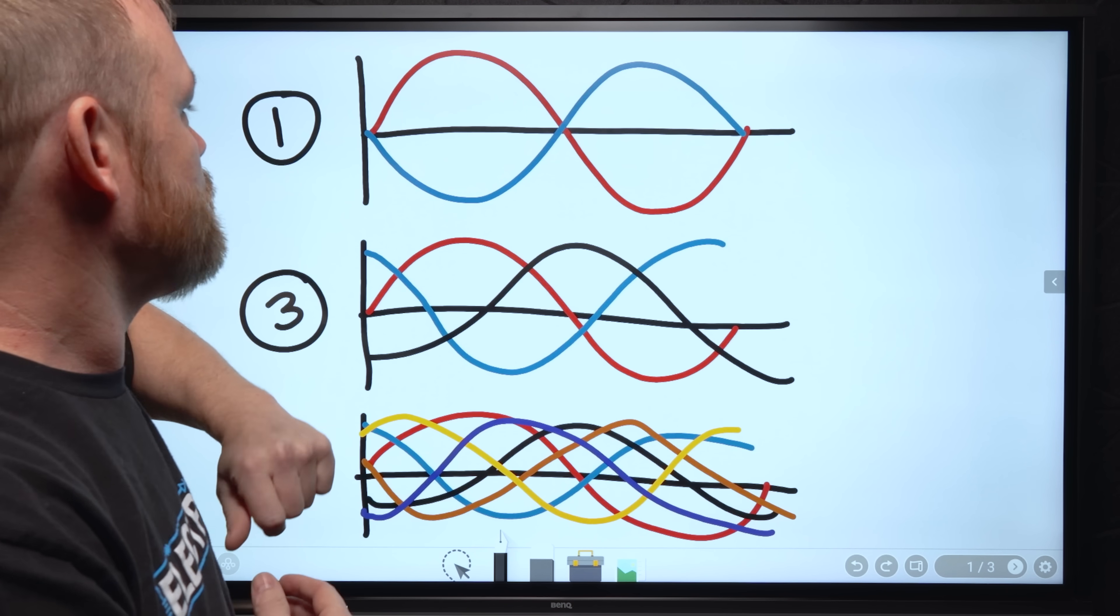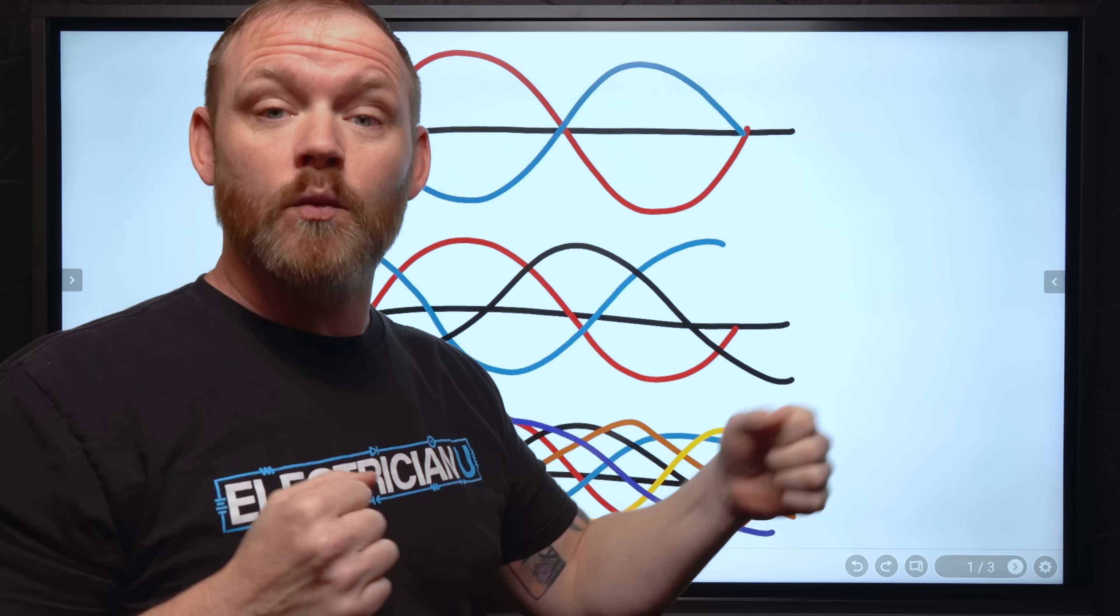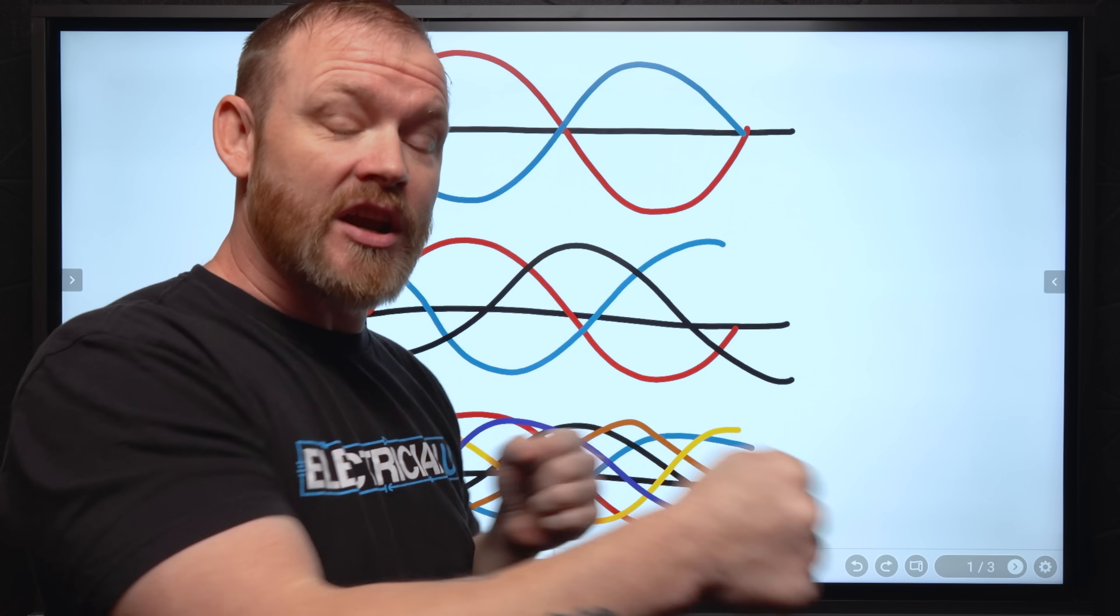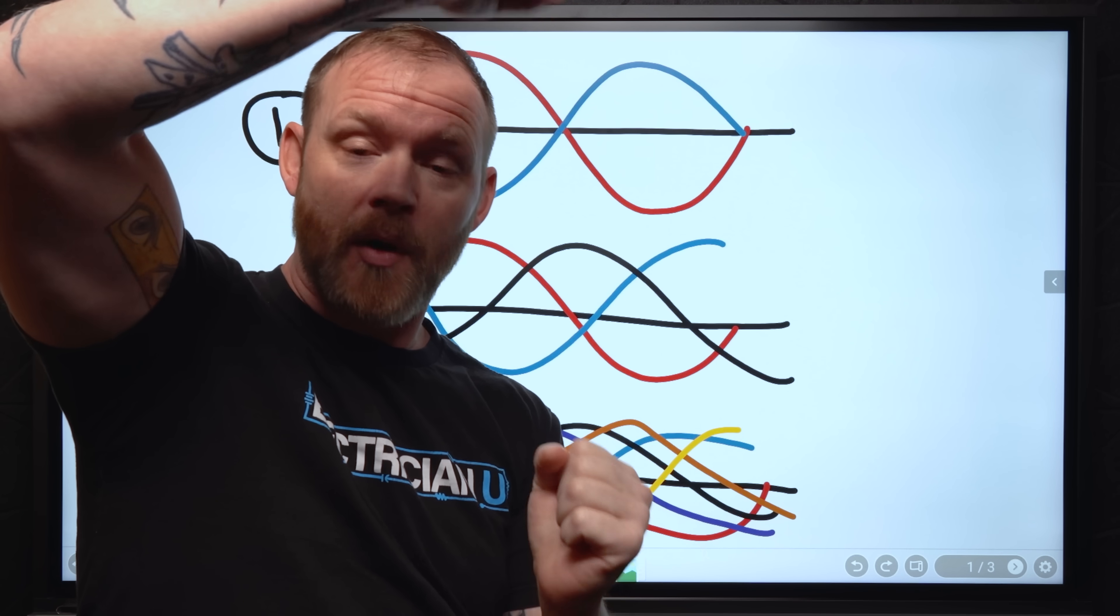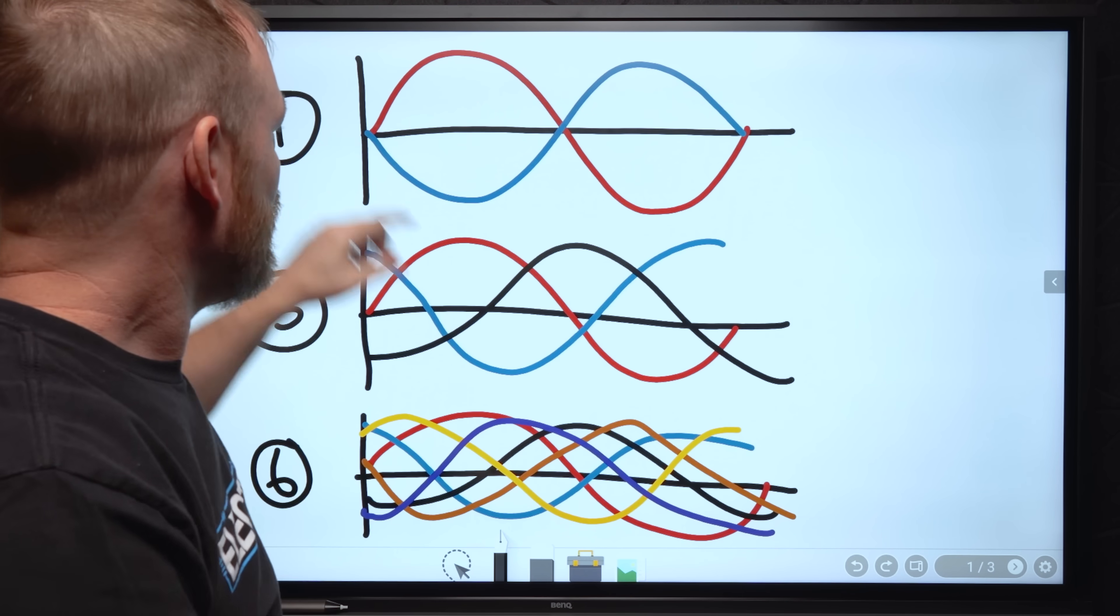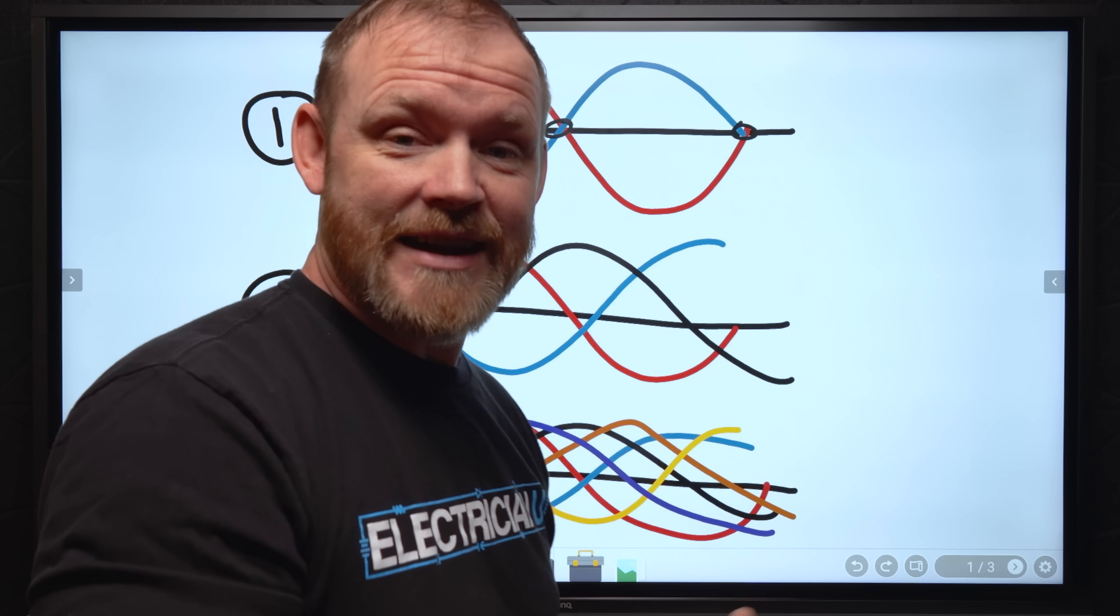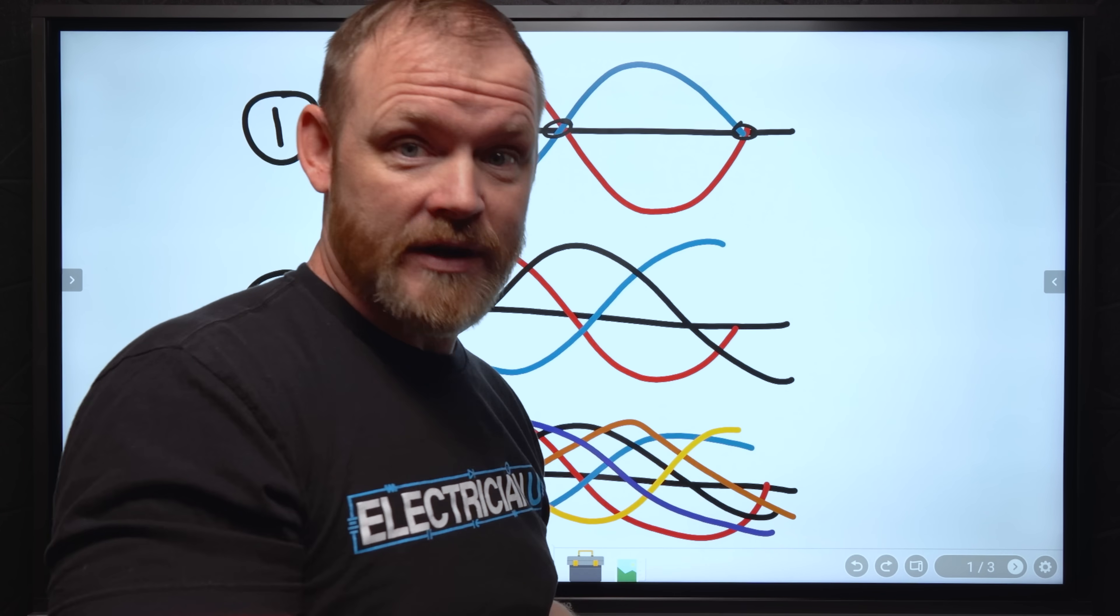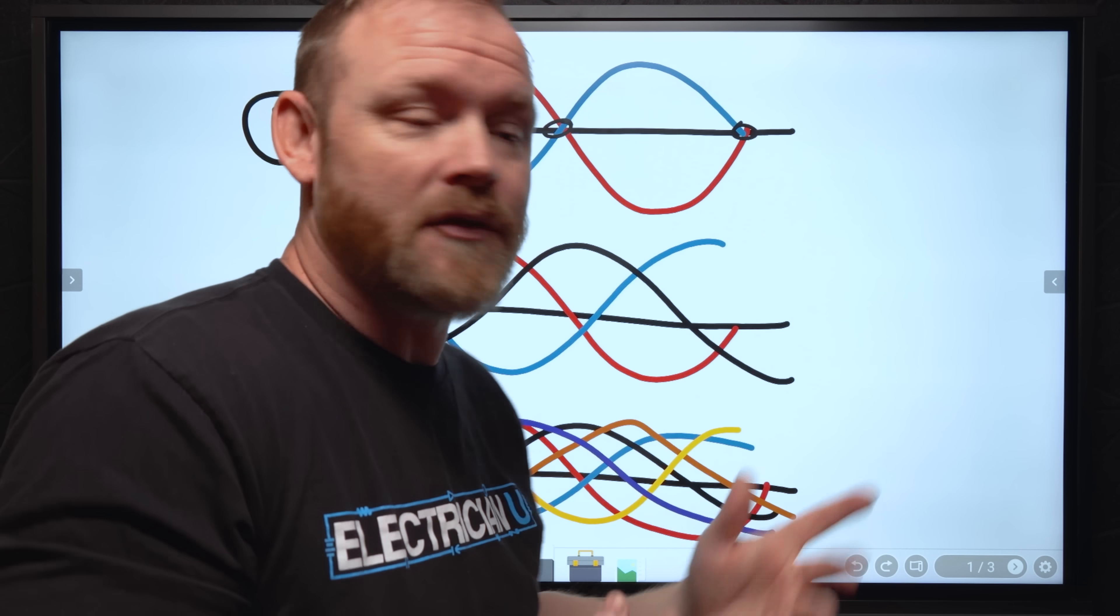If we have a single-phase system, what we have is a pulsing power supply. That means that 60 times a second, we're changing directions. And every time we change directions, because the windings are set 180 degrees apart from each other inside of a generator, we have these points where there is zero power being transferred. And if it's pulsing 60 times a second, it means that there's no power being transferred at this node 60 times a second also. So it's just less efficient.